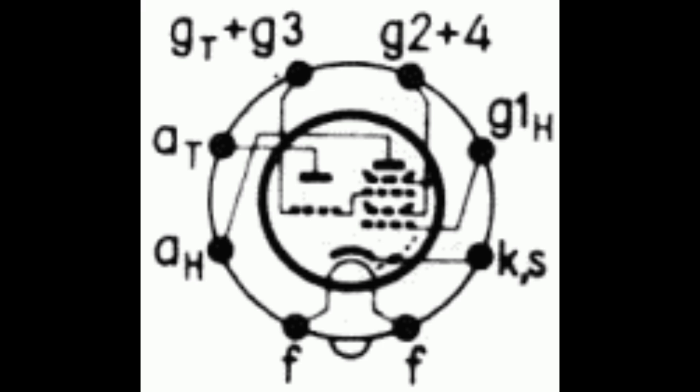It's what's referred to as a frequency converter, a triode hexode. It has a single cathode, as you can see, marked K-S, and it has two plates. One is a triode with just a single grid, and that grid is also connected as the control grid on the hexode side, which has got four grids, and a plate.